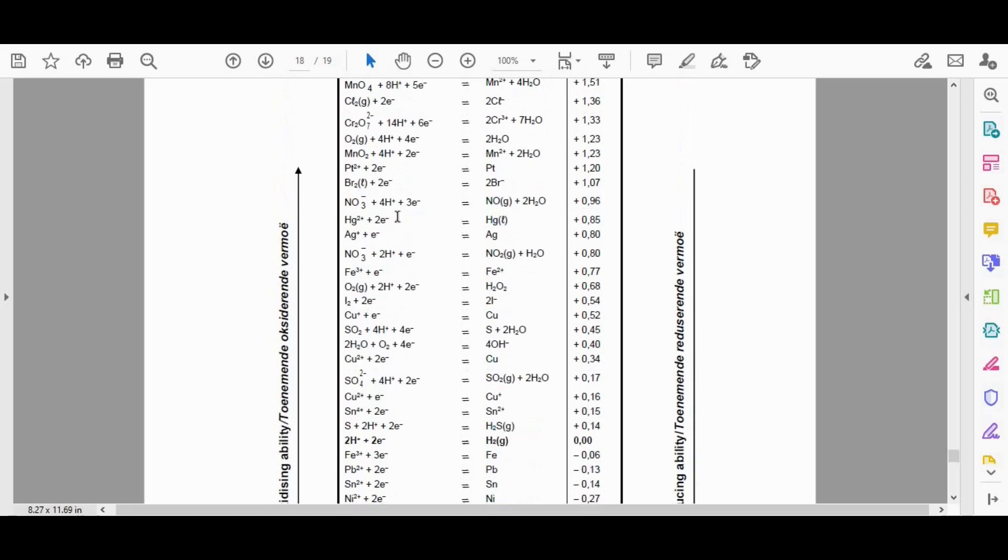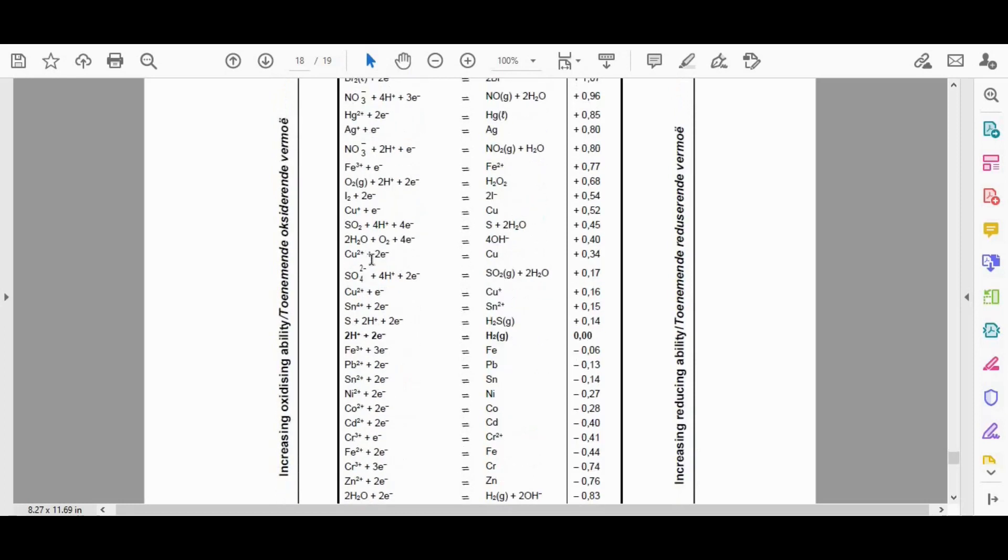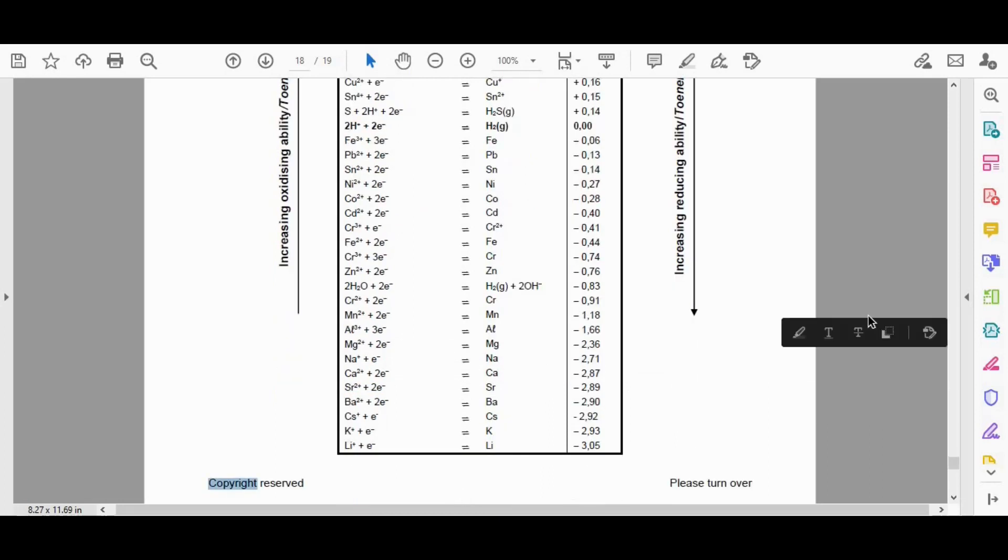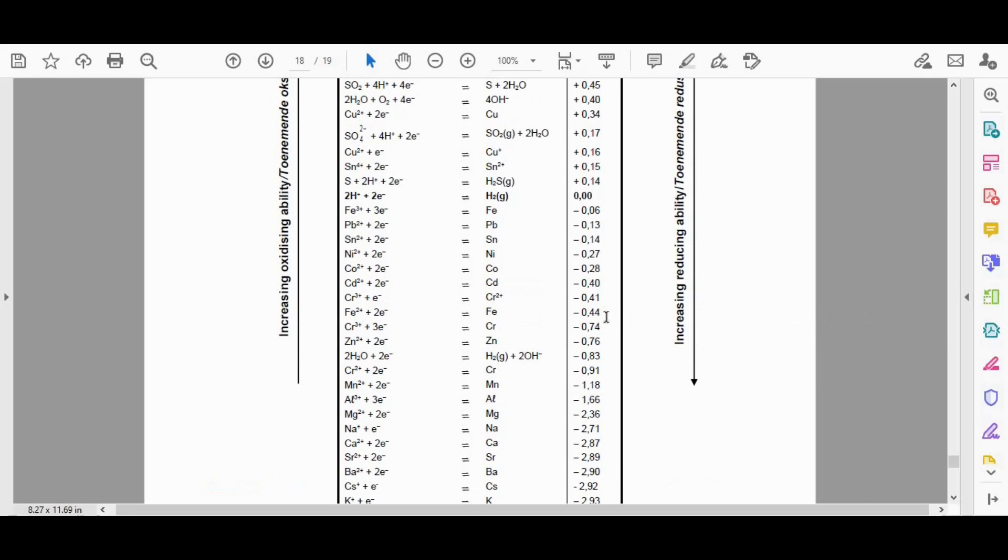And if I look for iron, Fe, I'm going to start at the top again, and just scroll through. Okay, here we go, I've got the iron Fe2+ plus 2E, or 2 electrons rather. And I see it has a value of negative 0.44 rather.